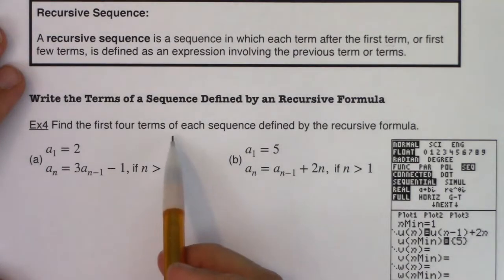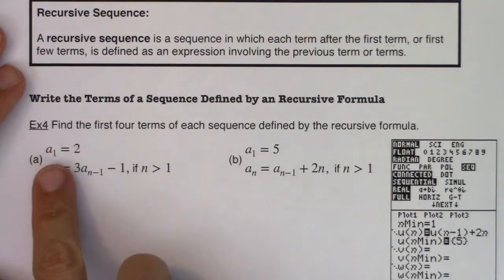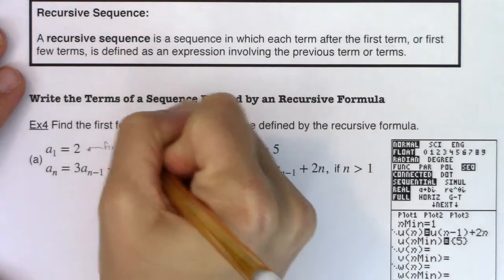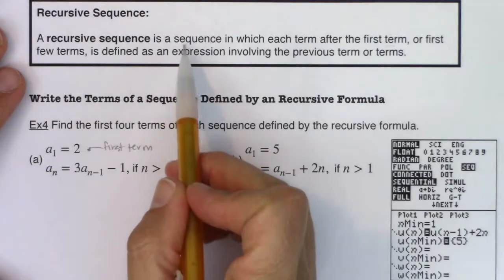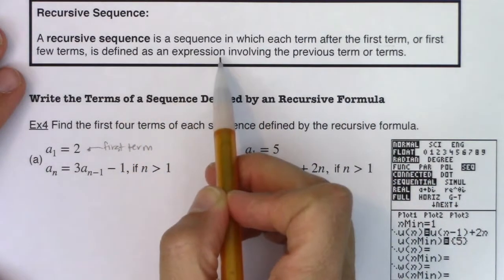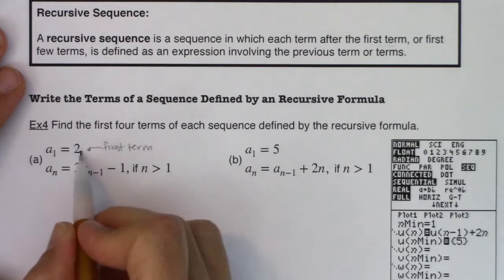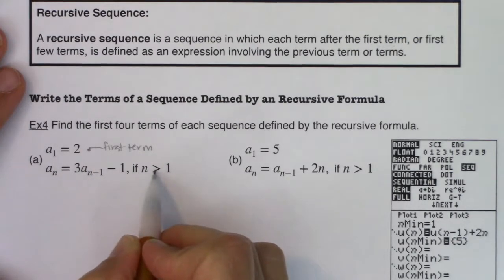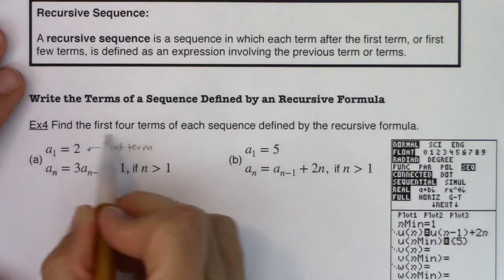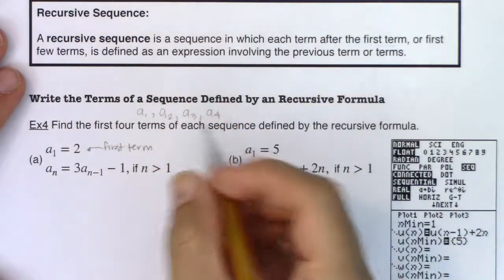Find the first four terms of each sequence defined by the recursive formula. You'll always have a starting point — here it's a₁ = 2. You have to be given a starting point with recursive sequences. So when n is 1, a₁ is 2. For every term after that, when n is greater than 1 — meaning n is 2, 3, or 4 — we follow the formula. I need to find a₁, a₂, a₃, and a₄, and a₁ is already given.